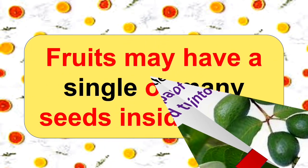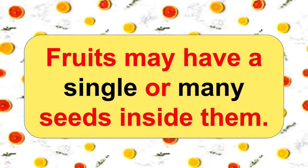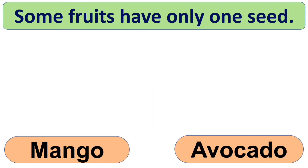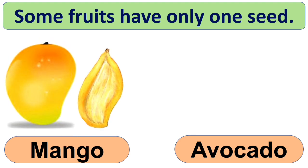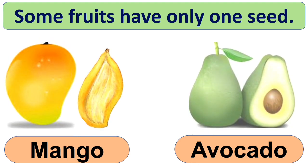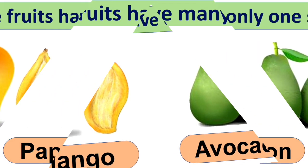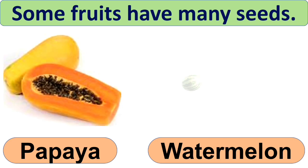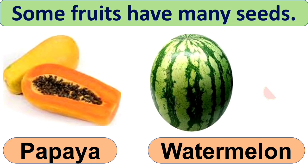Fruits may have single or many seeds inside them. Some fruits have only one seed, like mango and avocado. There are also some fruits that have many seeds — examples are papaya and watermelon.